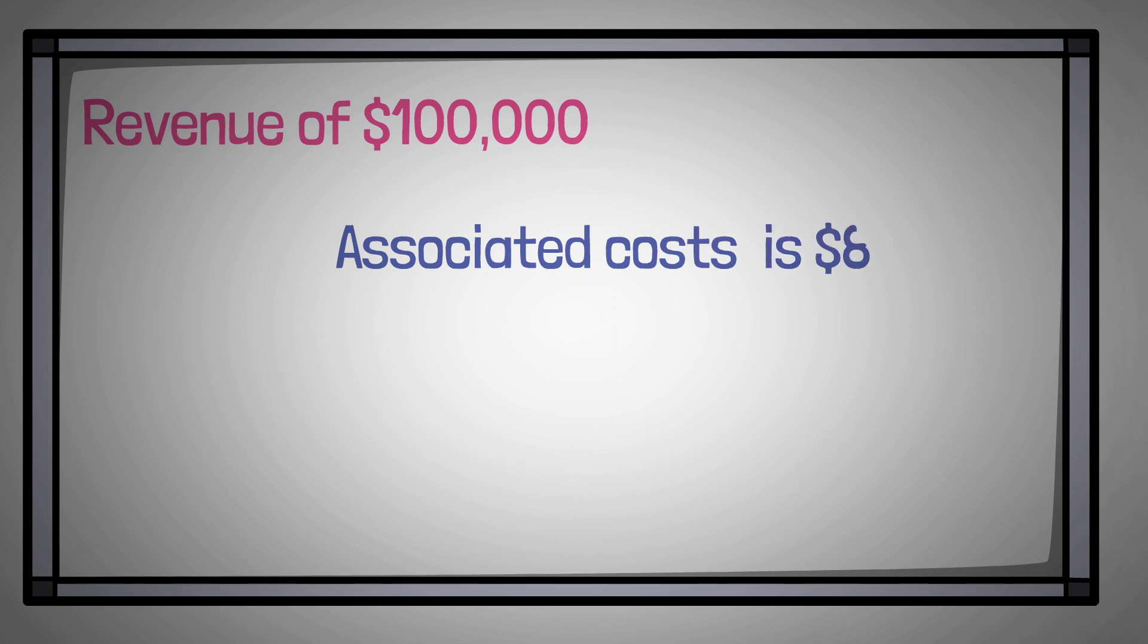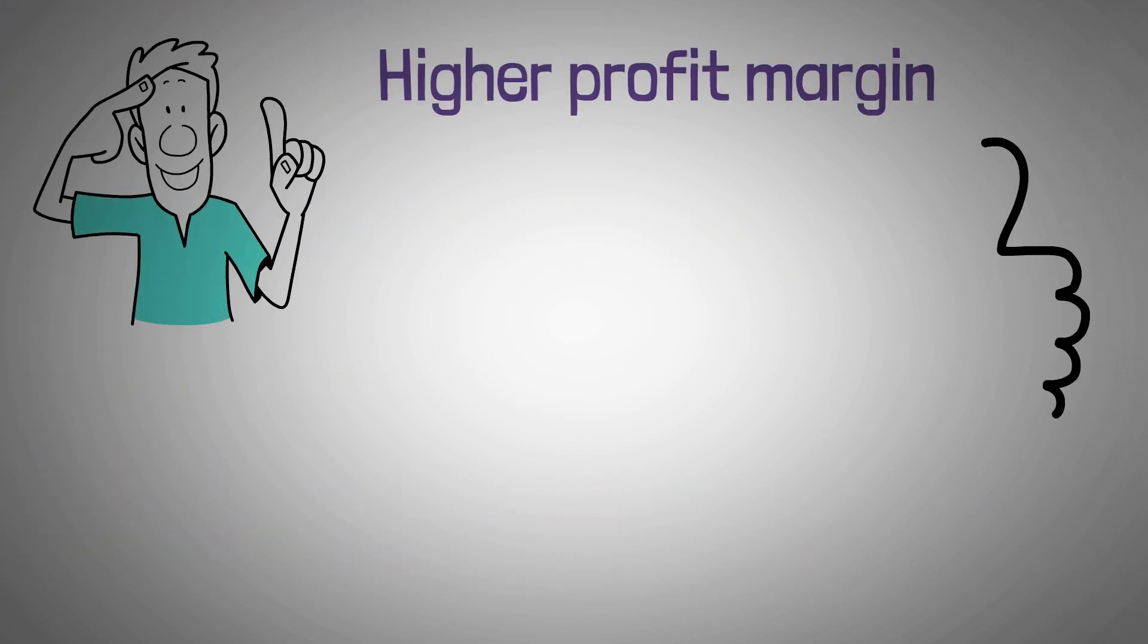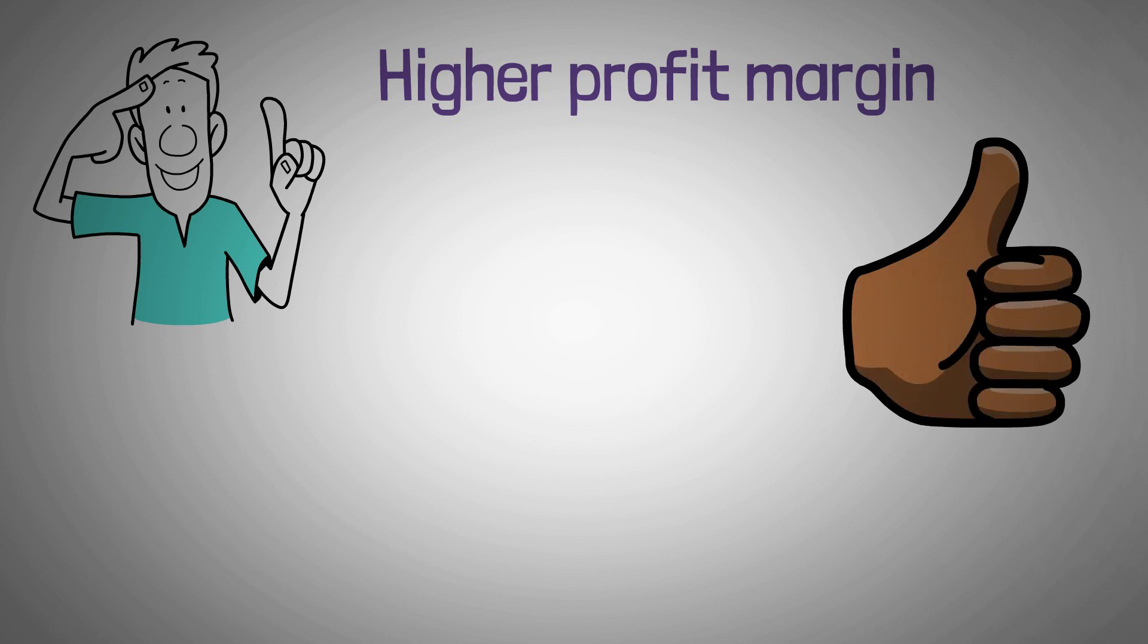If a business has a revenue of $100,000 and the costs associated with it are $80,000, the net profit is $20,000 and the profit margin is 20%. It's important to note that a higher profit margin is generally considered to be better than a lower profit margin.